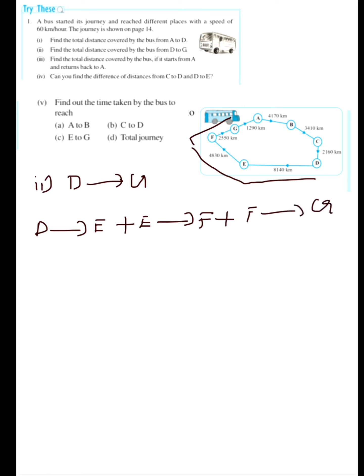What is the distance from D to E? In the question it is 8140 km. Plus from E to F it is 4830 km. And finally from F to G it is 2550 km.